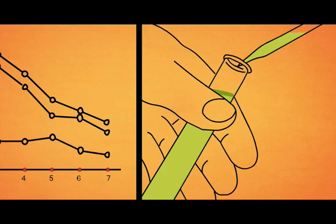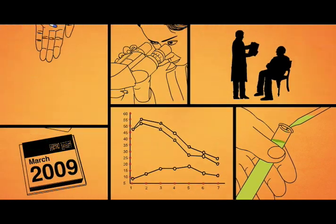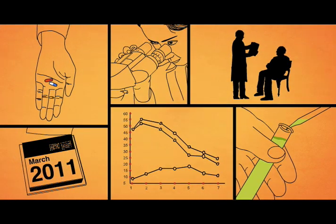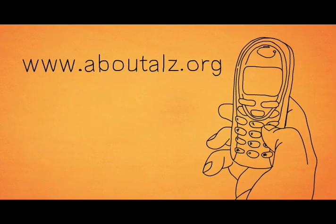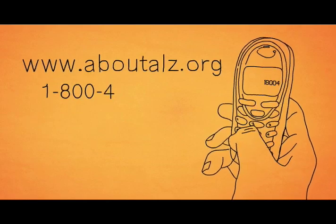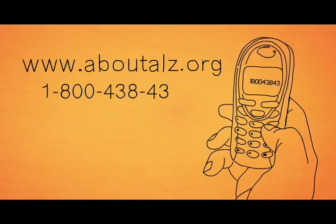Because Alzheimer's develops so slowly, it takes a long time to see if a new drug is doing any good. You may be able to help. For information on how to get involved in drug trials, go to www.aboutalz.org or call 1-800-438-4380.